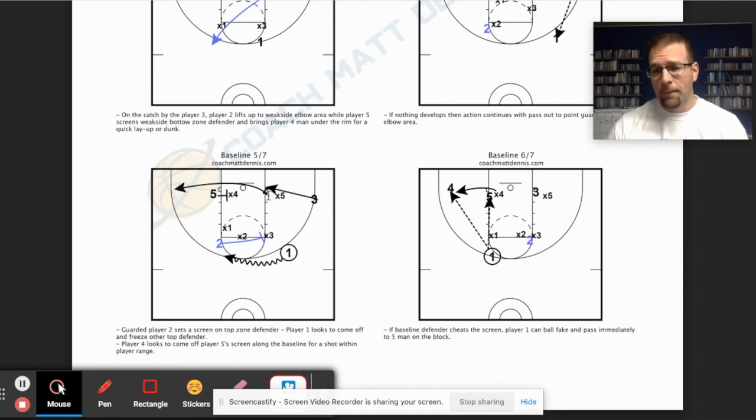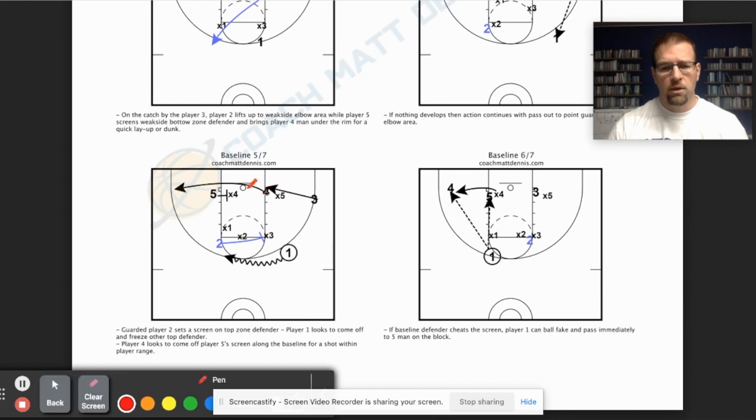Now, if four happens to be a decent shooter for us, we can go ahead and we can screen X4 and we can get the four running through. Or a variation of this would be have four screen X5 and send your three all the way through. So if one of those is a better three-point shooter, then you could run the screens for them a little bit.